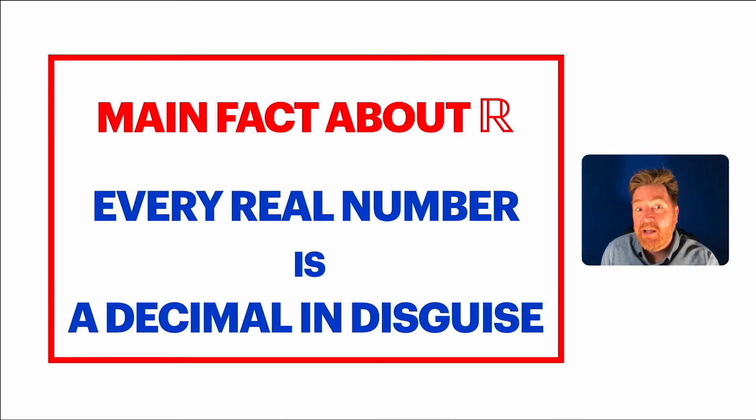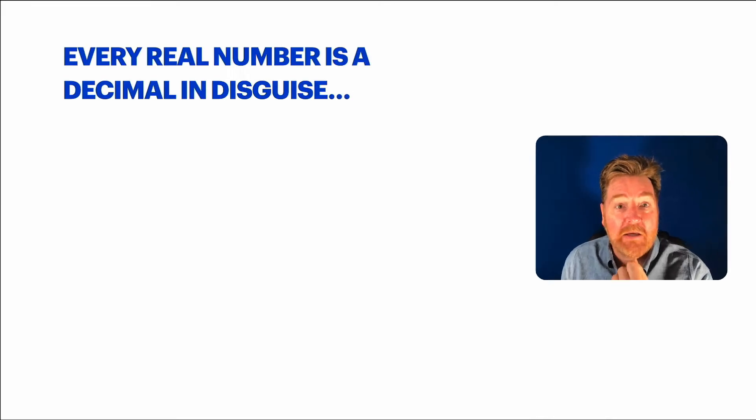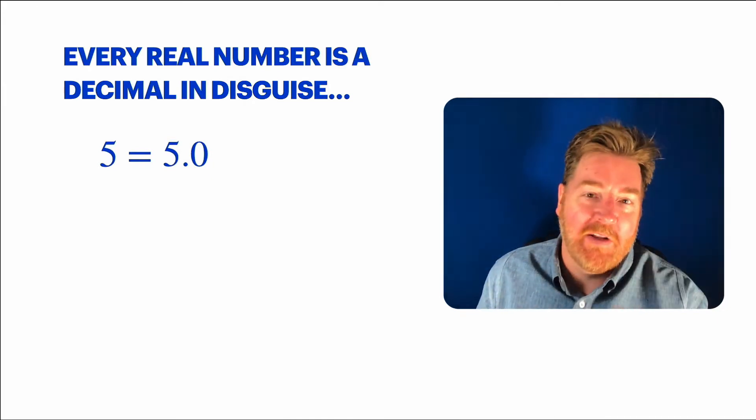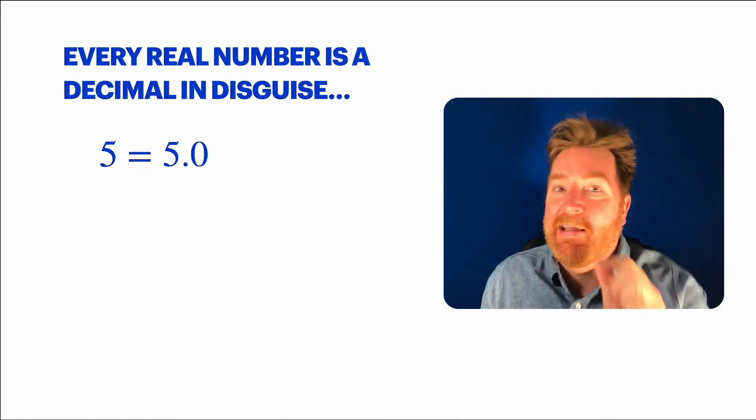It turns out that every real number is a decimal, possibly in disguise. What do we mean by that? Well, if you take a number like 5, we know that we can just write it as 5.0. That looks a little bit more like a decimal. That's what we mean by in disguise.